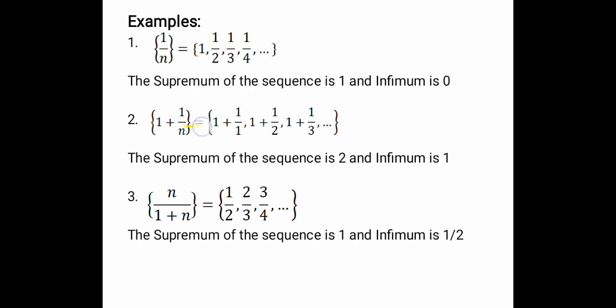The next sequence is {1 + 1/n}. When we expand this we get 1+1/1, 1+1/2, 1+1/3, and so on — which gives 2, 1.5, 1.333, 1.25, and so on. The largest value in the sequence is 2, so this sequence is bounded above by 2. The sequence tends towards 1, so it is bounded below by the real number 1.